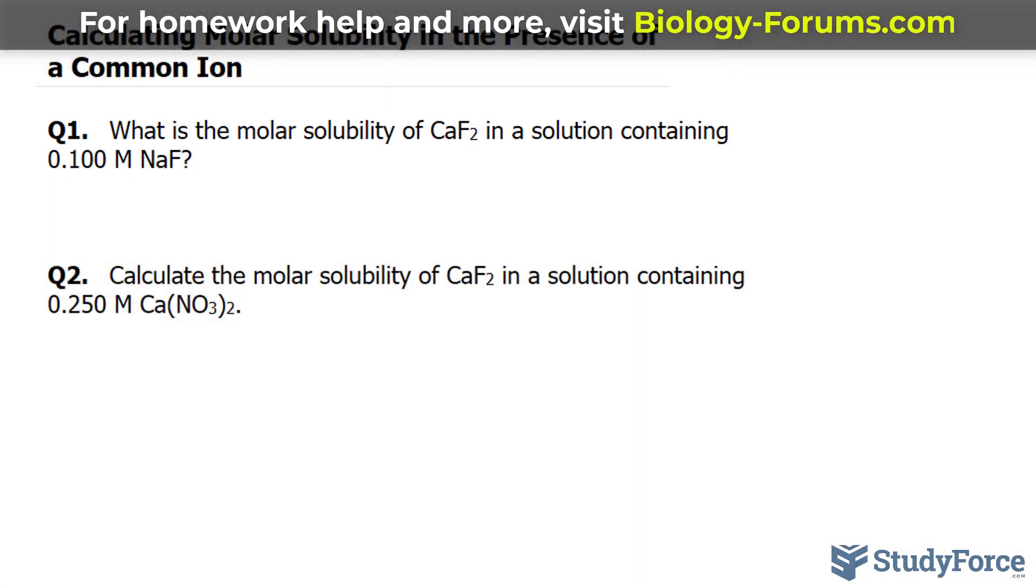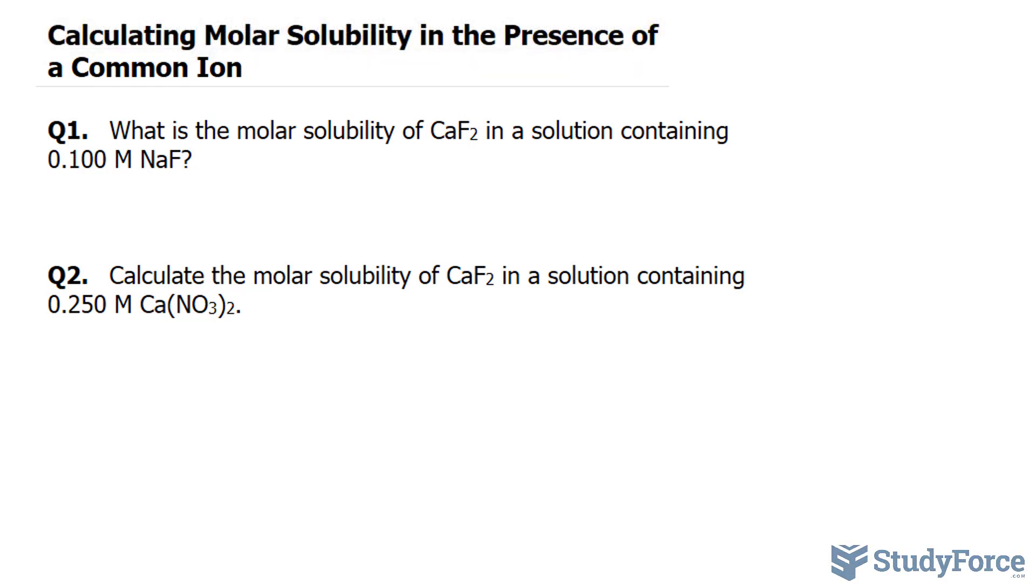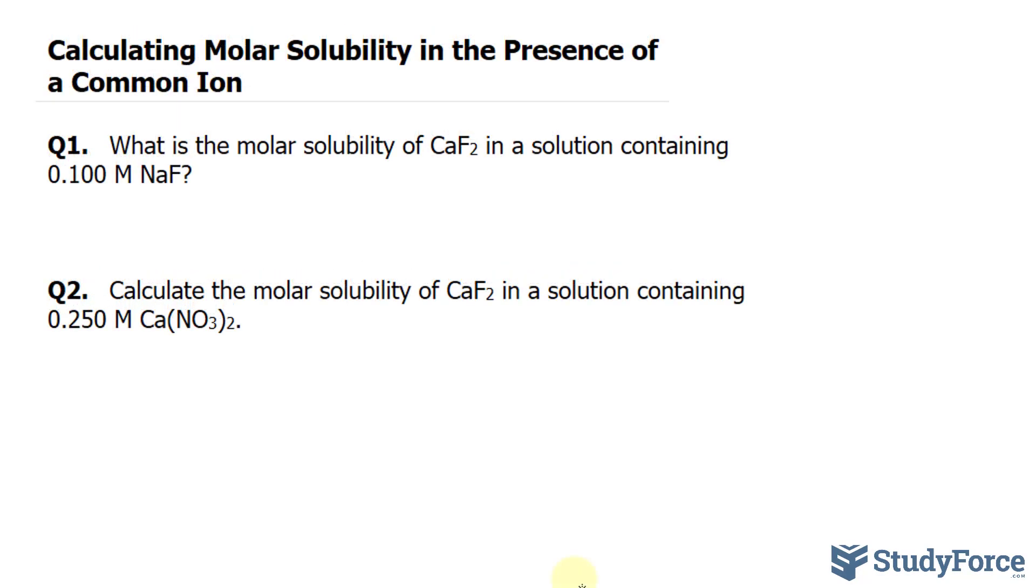To answer this problem, we'll begin by writing the reaction by which solid calcium fluoride dissolves into its constituent aqueous ions. So we have calcium fluoride, it breaks down into calcium ions, that's calcium 2+, and that's aqueous, plus fluorine ions, also aqueous. We need to balance this, of course, so I'll place a 2 in front of this ion.